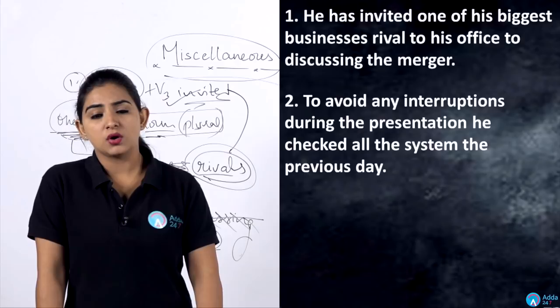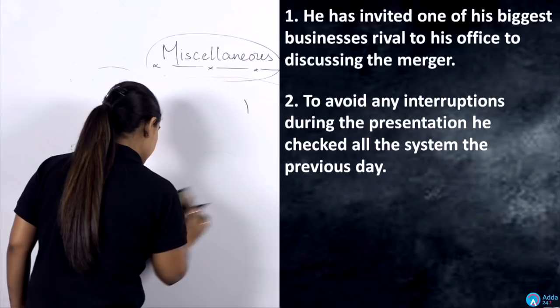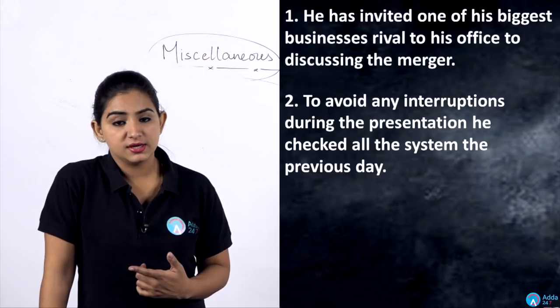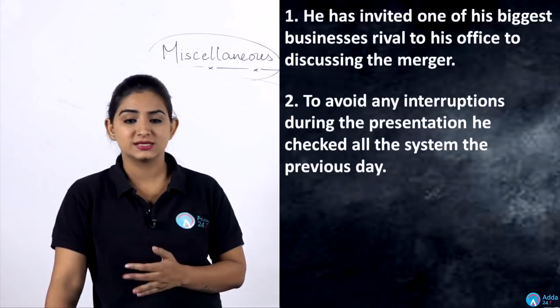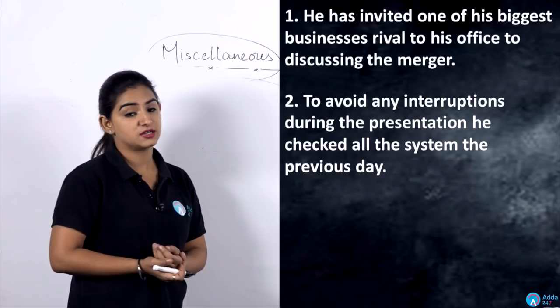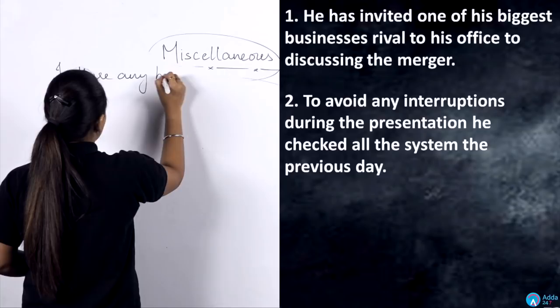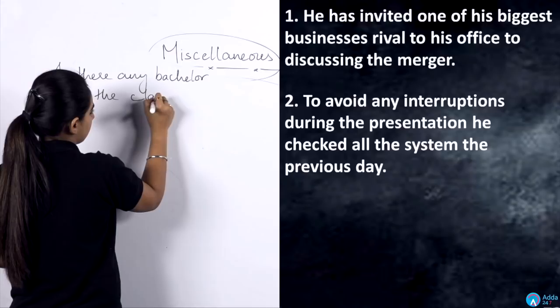Let's move to the second question: 'To avoid any interruptions during the presentation, he checked all the system the previous day.' Here the error is adjective-related. When using 'any,' the noun after it should be singular — because 'any' means 'one.' So 'a,' 'an,' 'any,' and 'one' are essentially equivalent. Therefore 'any interruptions' is wrong — we cannot use 'S' with the noun after 'any.'